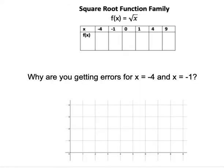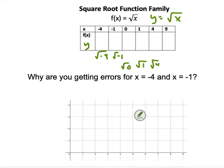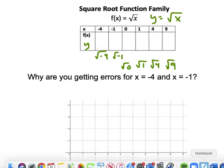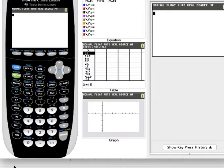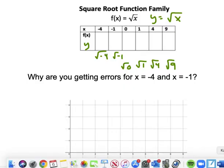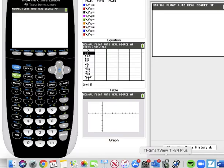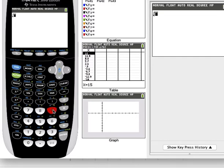The last function family we'll focus on is the square root function: f of x equals the square root of x, same as y equals the square root of x. To find our y values, we take the square root of negative 4, negative 1, 0, 1, 4, and 9. Working backwards with a calculator — square root of 9 is 3, square root of 4 is 2, square root of 1 is 1.